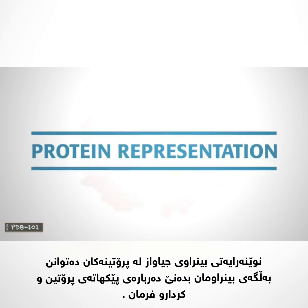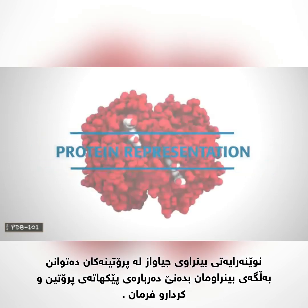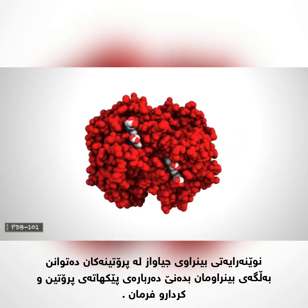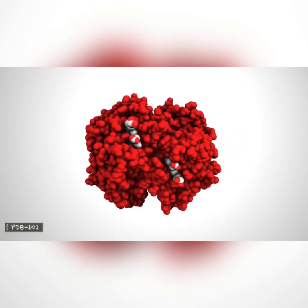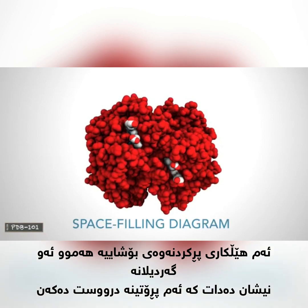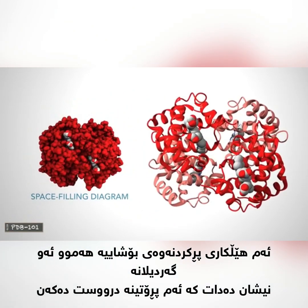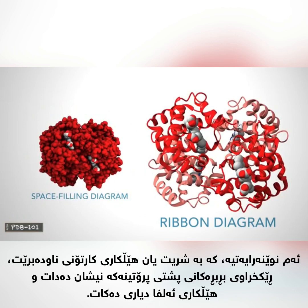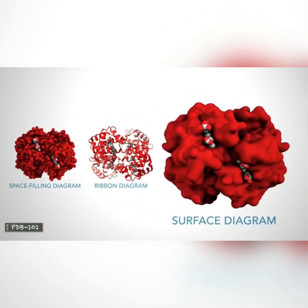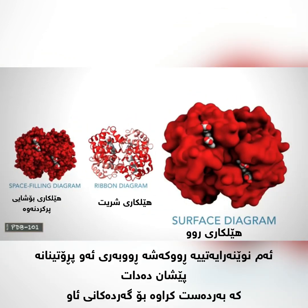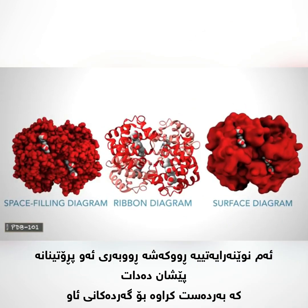Different visual representations of proteins can give us visual clues about protein structure and function. This space-filling diagram shows all of the atoms that make up this protein. This representation, called a ribbon or cartoon diagram, shows the organization of the protein backbone and highlights alpha helices. This surface representation shows the areas in the protein that are accessible to water molecules.